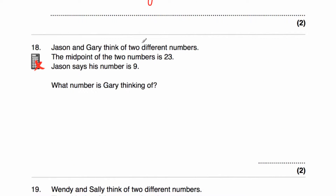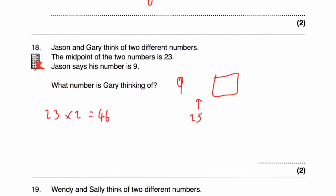Question eighteen: Jason and Gary think of two different numbers. The midpoint is 23 and Jason's number is 9. We can work backwards: 23 times 2 equals 46, so the two numbers must add up to 46. Then 46 minus 9 is 37, so Gary's number is 37. Alternatively, to get from 9 to the midpoint of 23 we add 14; adding another 14 gives 37. Gary was thinking of 37.